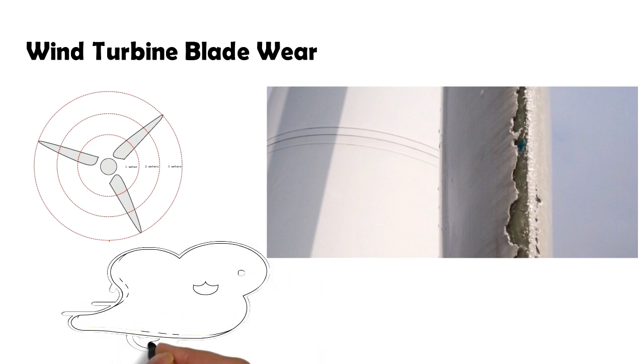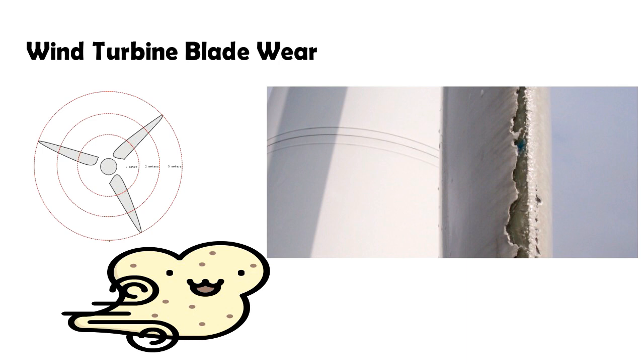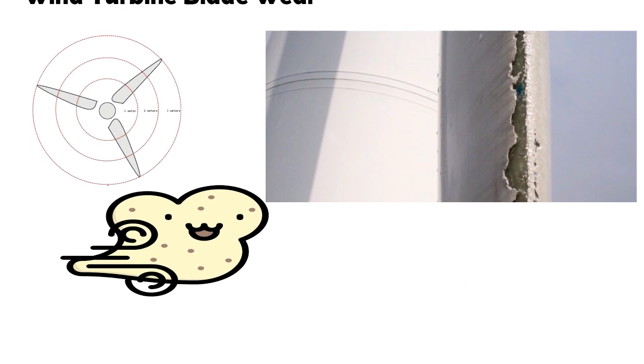Any wind turbine located in terrain that has an abundance of dust, bugs, rain, sleet, snow, or any other abrasive air particulate is more susceptible to erosion than a turbine located in an area where these factors are not present. So it should be ensured that the blade wear is minimal.